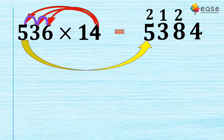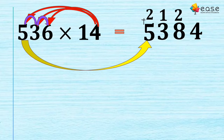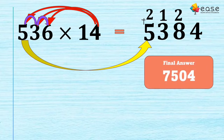To add that up: 5 + 2 = 7, 3 + 1 = 4, 8 + 2 = 10 — that's a carryover and 0 — so the answer is 7504. Let's verify: 7504 is the final answer. Correct!